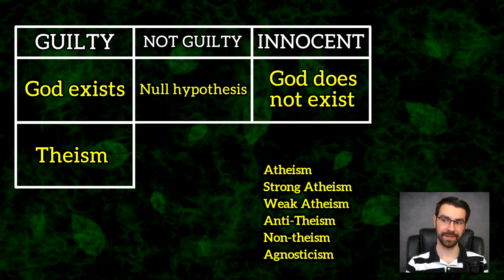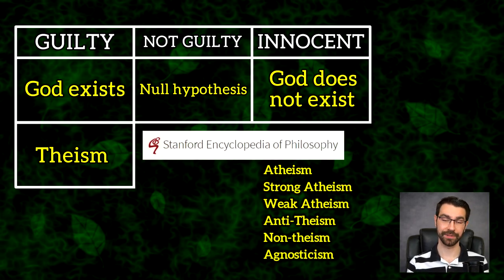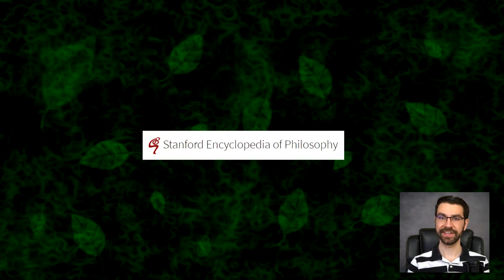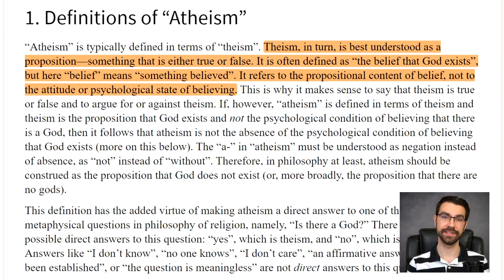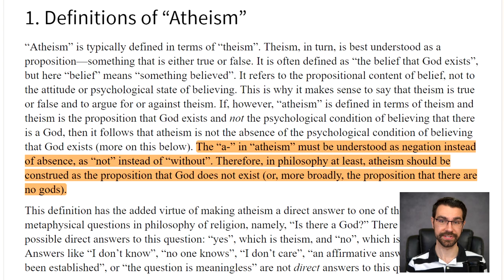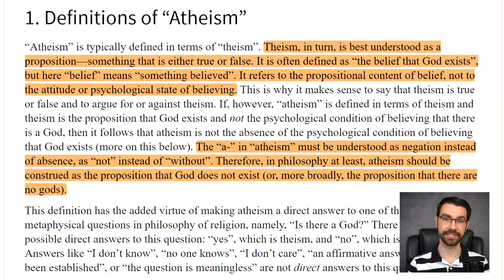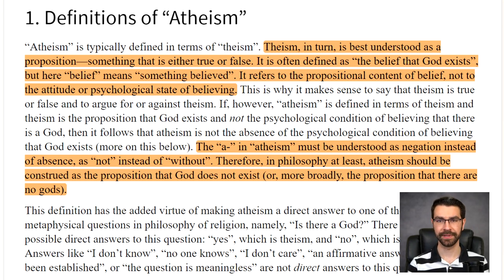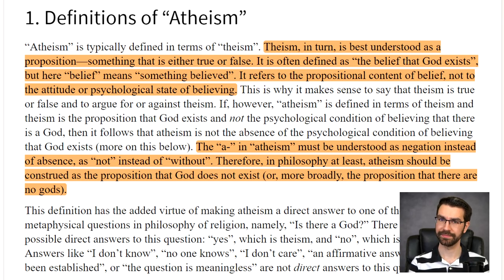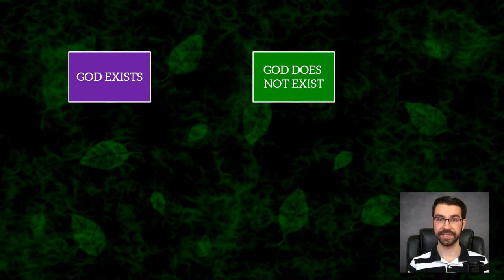So what about the others? Always a good reference is the Stanford Encyclopedia of Philosophy. It defines theism as the proposition that God exists, and atheism as the proposition that God does not exist, and theists and atheists are the people who accept these propositions. I think these definitions are useful, but incomplete. They make sense as a way to classify the arguments, but they fail to describe the null hypothesis, which is important.